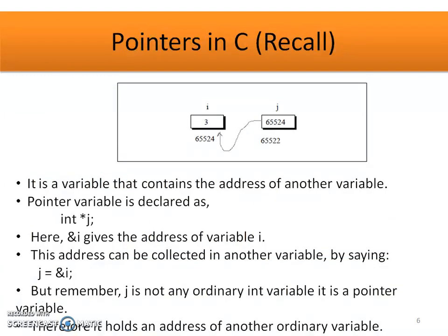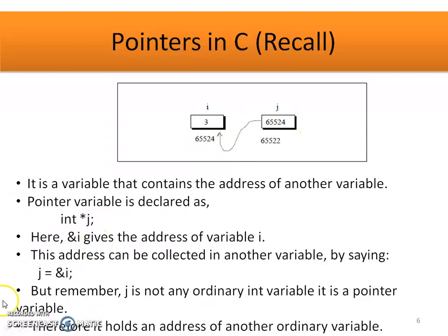Now let's recollect the concept of pointers in C. A pointer variable is declared with an asterisk symbol and it holds the address of an ordinary variable. For example, j is a pointer variable pointing to i by storing its address. We must remember that j should not be an ordinary variable — it should be a pointer variable, and that's why it holds the address of another ordinary variable.